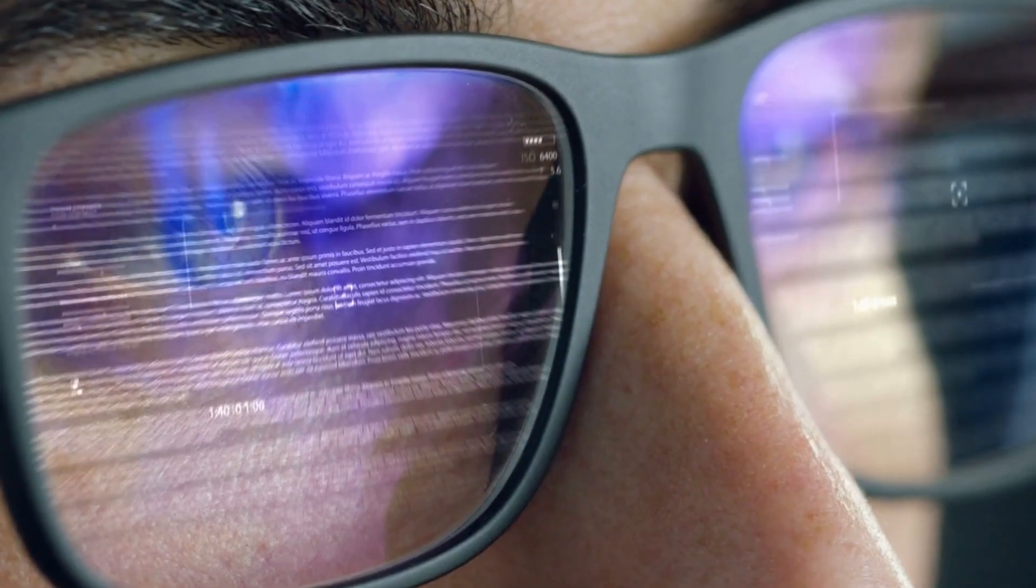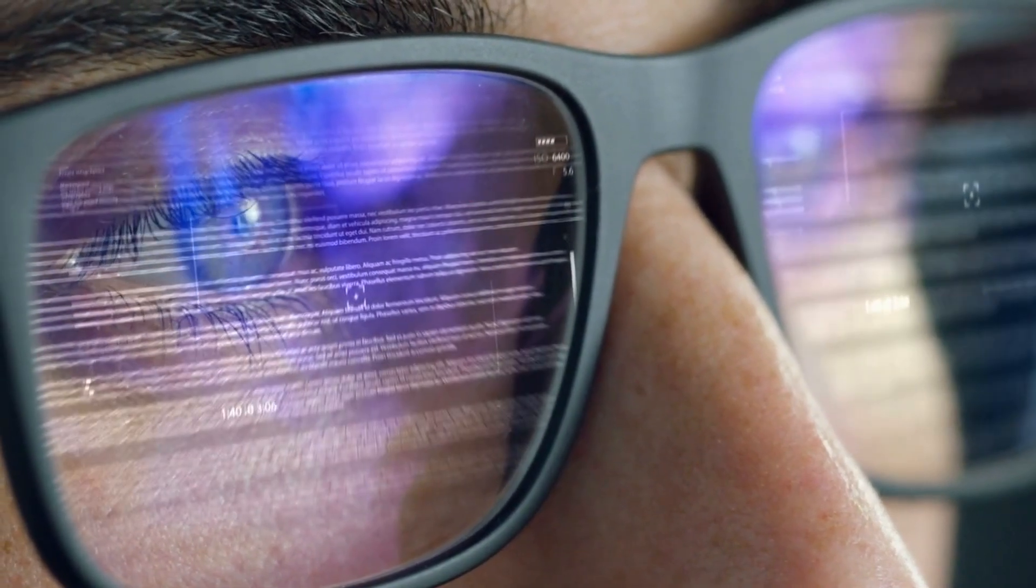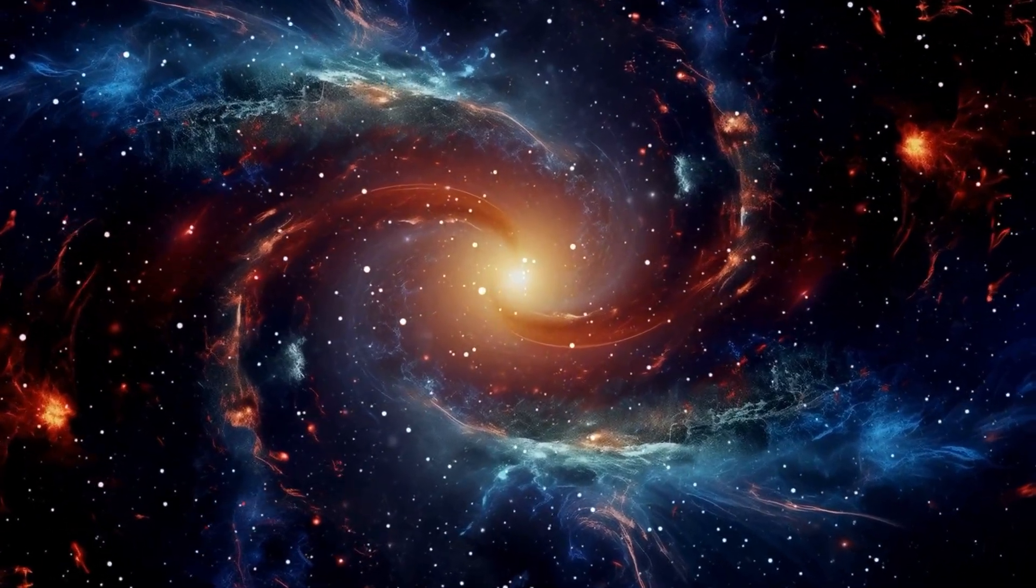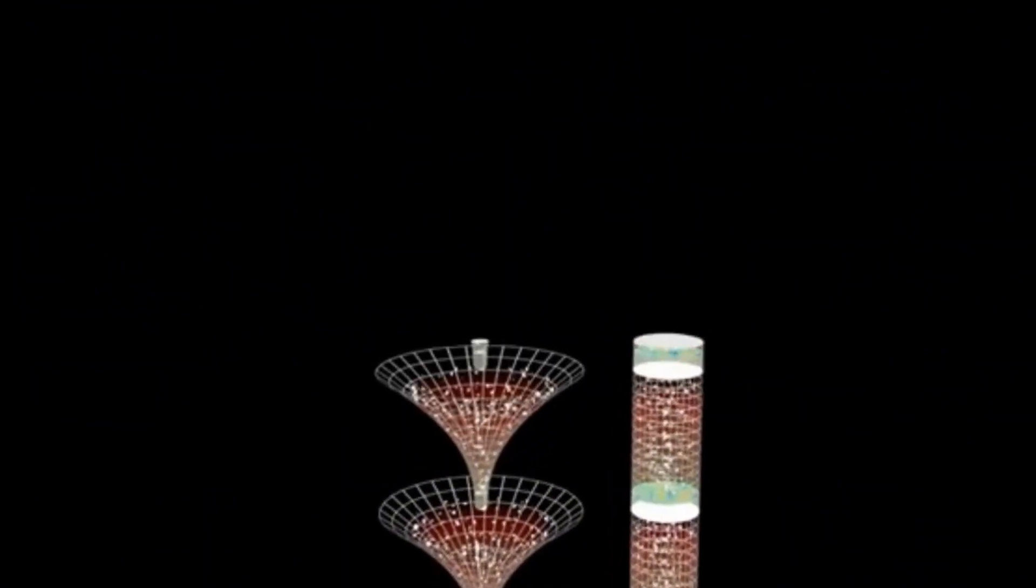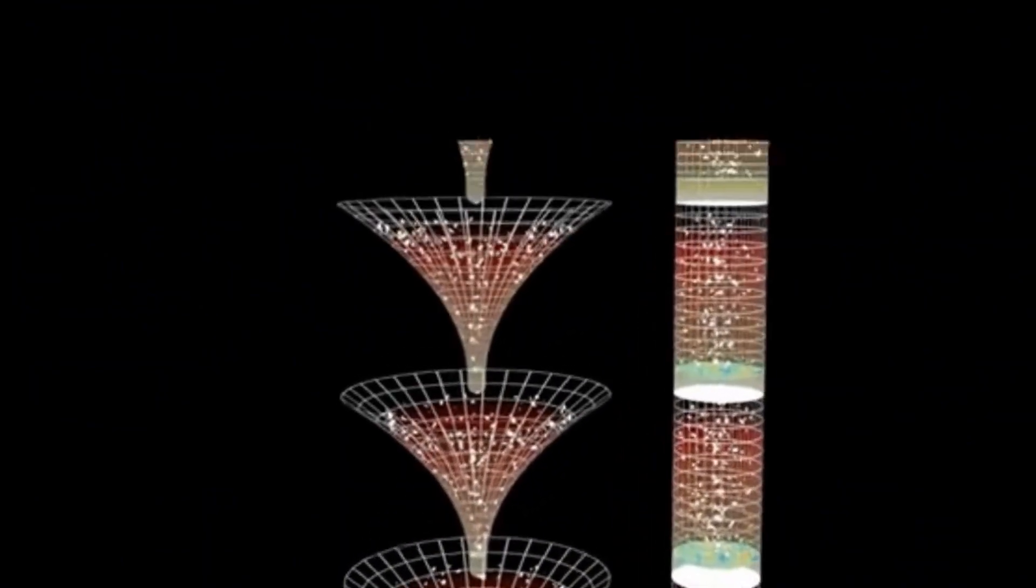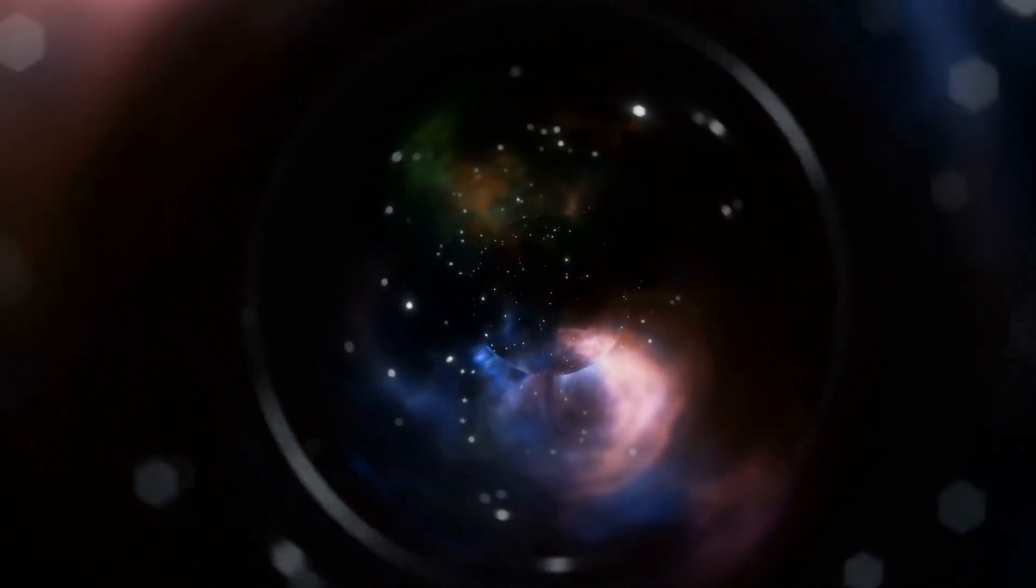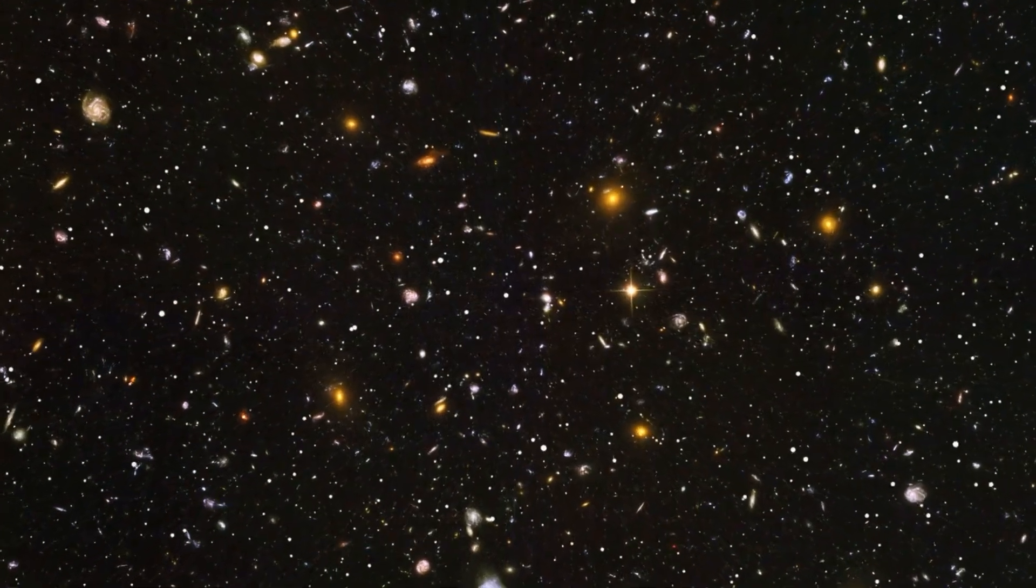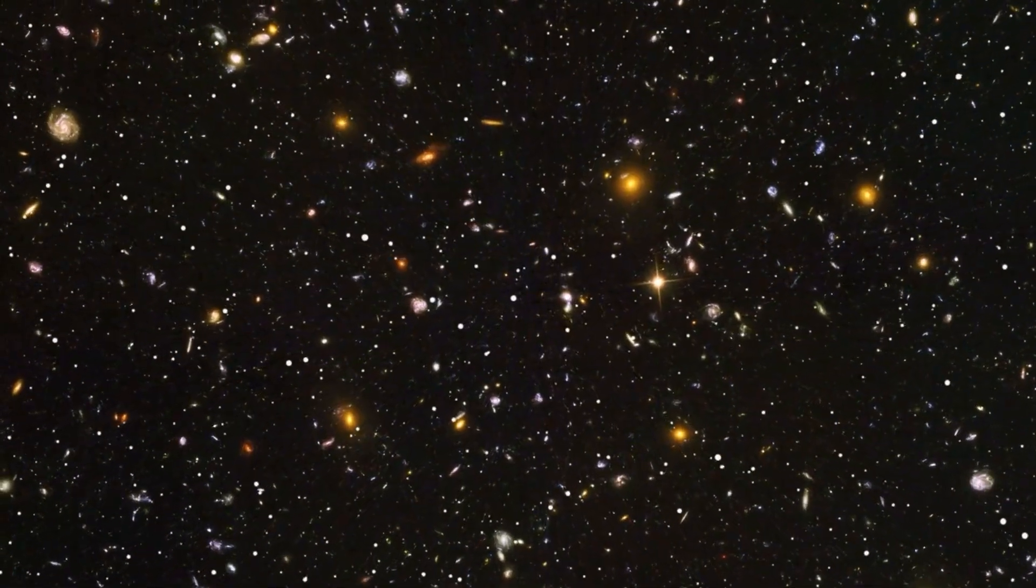Some researchers have begun to ask a question once dismissed as science fiction. Could we be seeing the remnants of previous universes? A concept known as the cyclic universe theory is gaining traction. Proposed by thinkers like Roger Penrose, this theory suggests our universe is one in a never-ending loop, eternally expanding, collapsing, and being reborn.